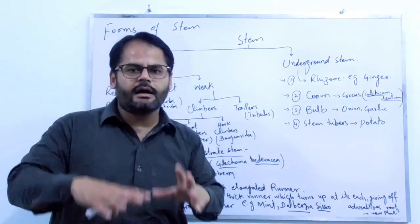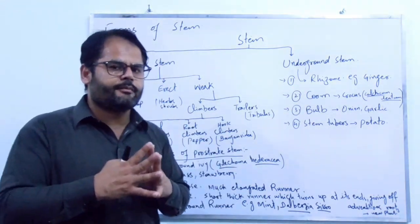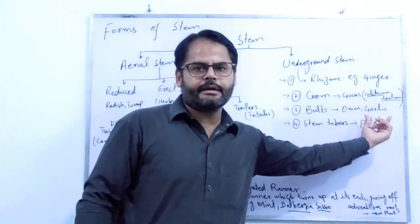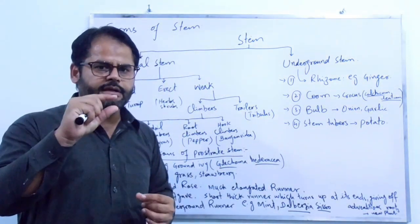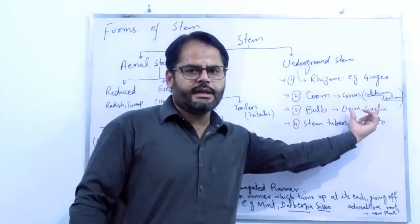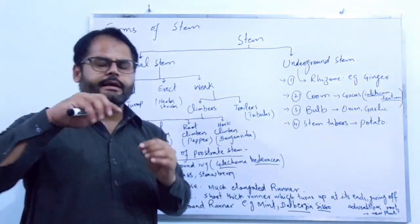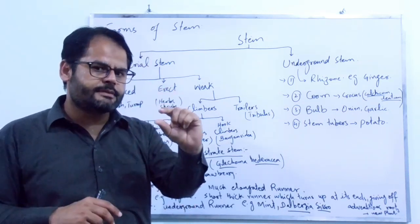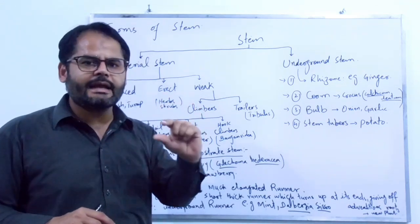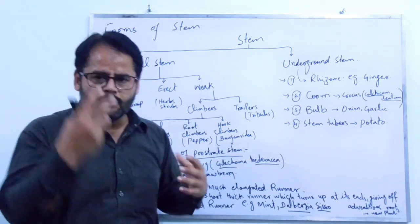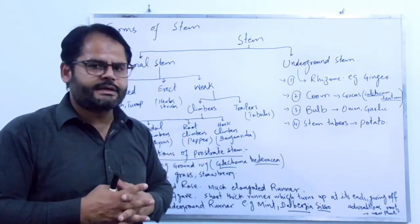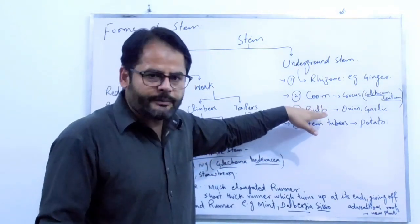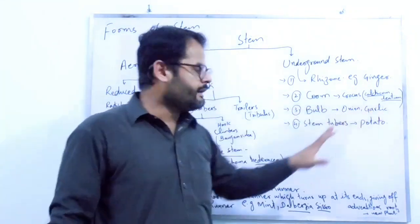The third underground stem type is called bulb. The bulb stem is found in onion and garlic. These plants have a very much reduced stem which is flat in structure. From the upper surface of the stem arise scale-like leaves, and from the lower surface arise adventitious roots. Examples of bulb are onion and garlic.